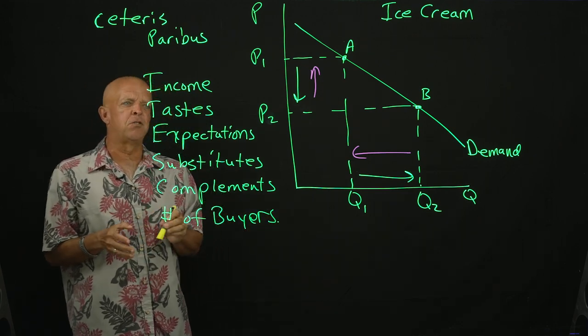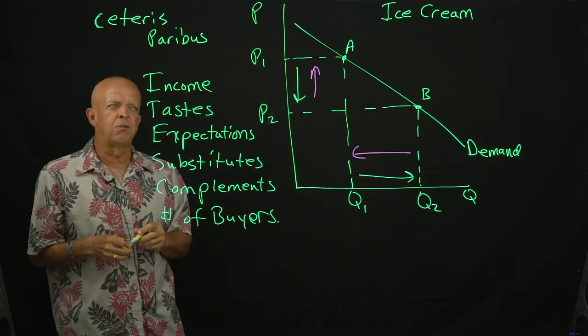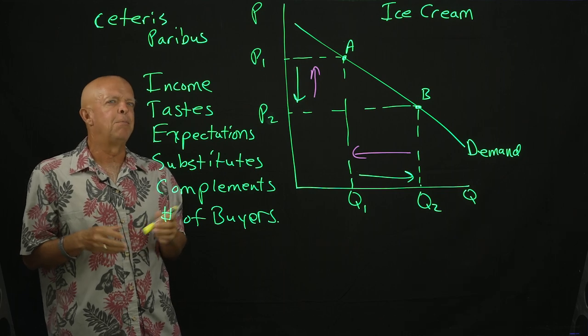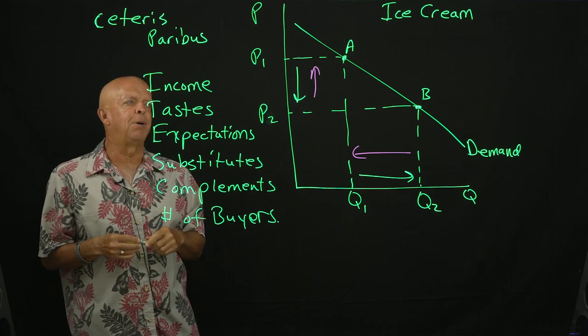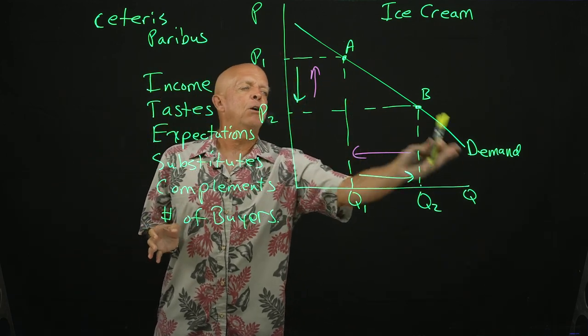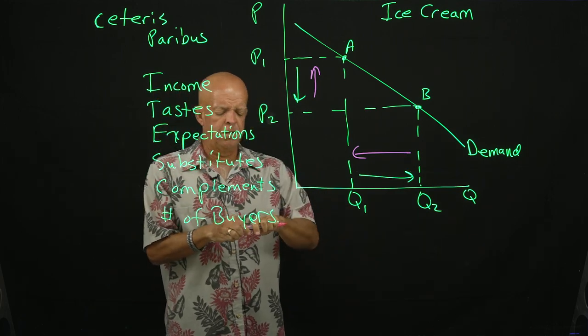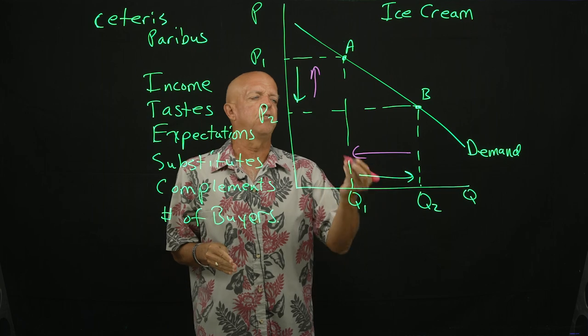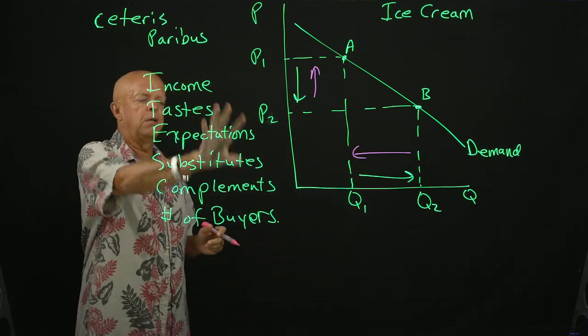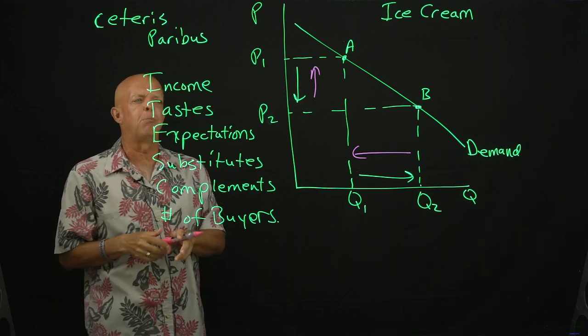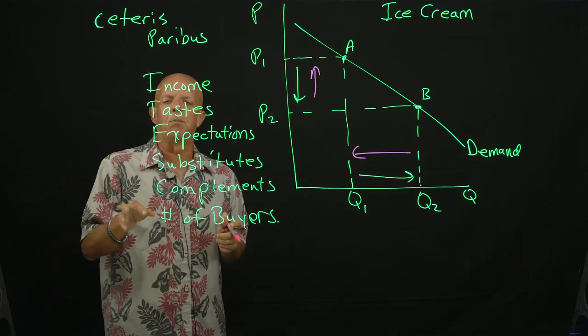Now, when any of these things change, of course, it has an impact on you, the consumer's decision to buy ice cream. But how do we show that impact? Well, ladies and gentlemen, we show that impact by changing the entire curve and making it a different position in the space. So, let's take a simple one. I go into all of these explanations in my PowerPoint slide for the chapter. So, we can just pick a very, very simple one.